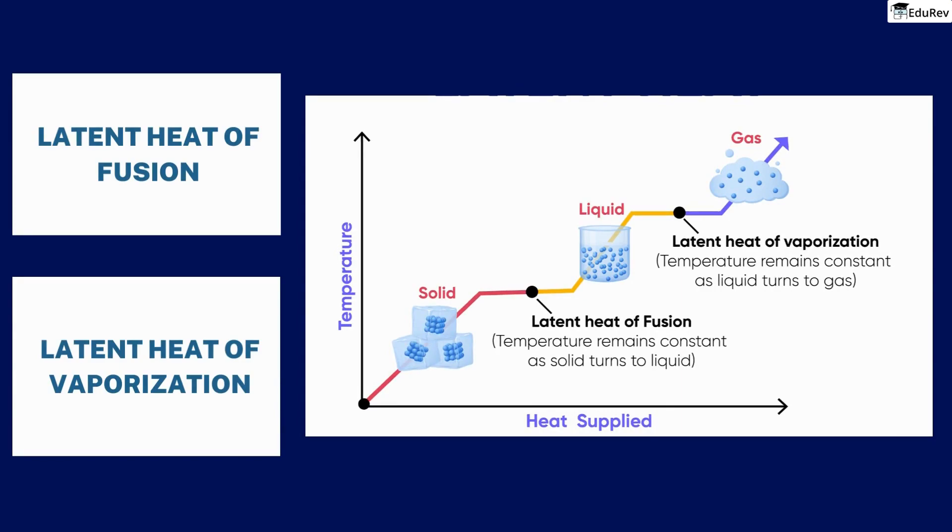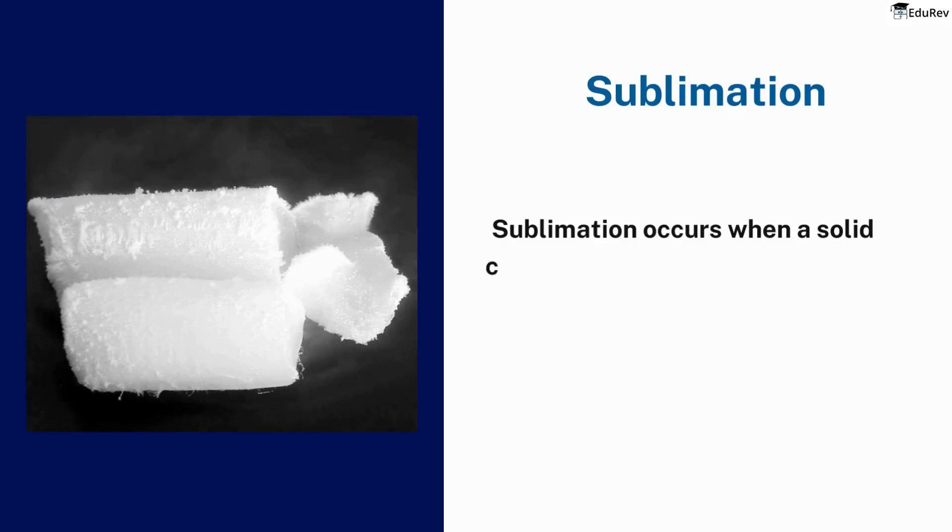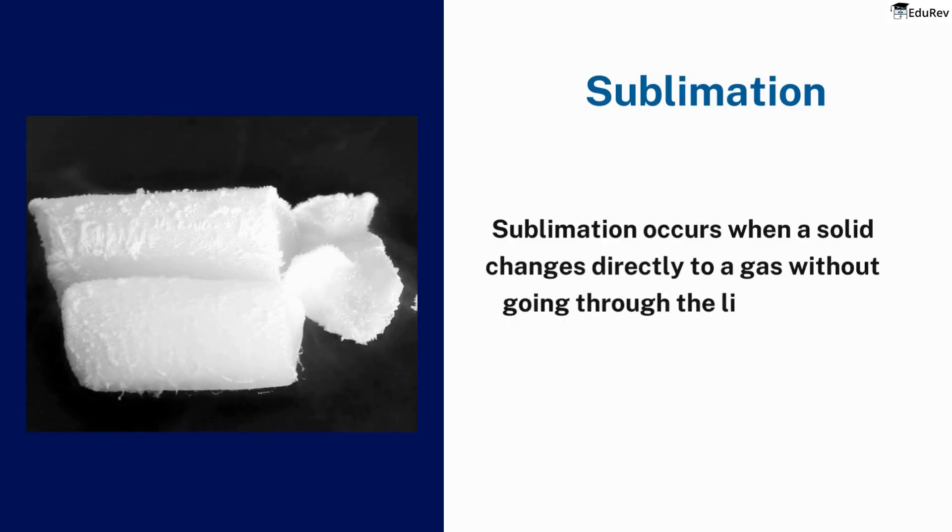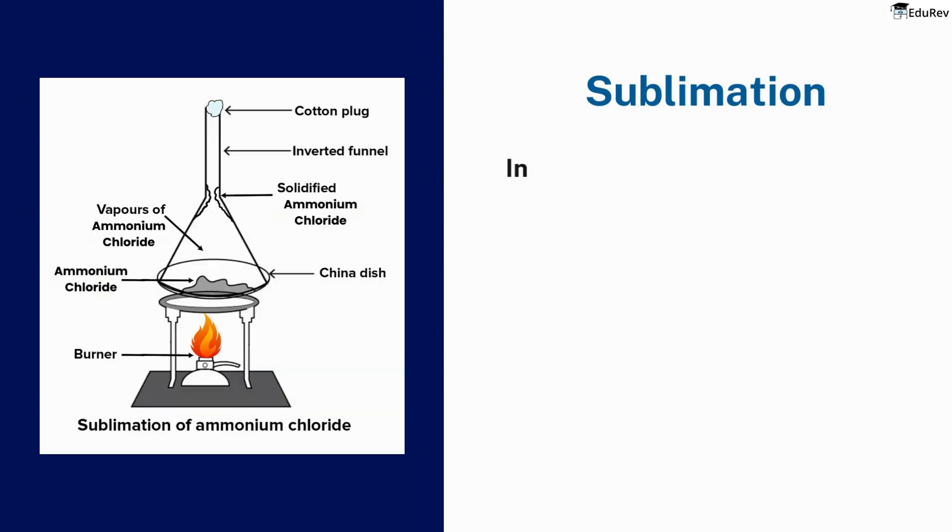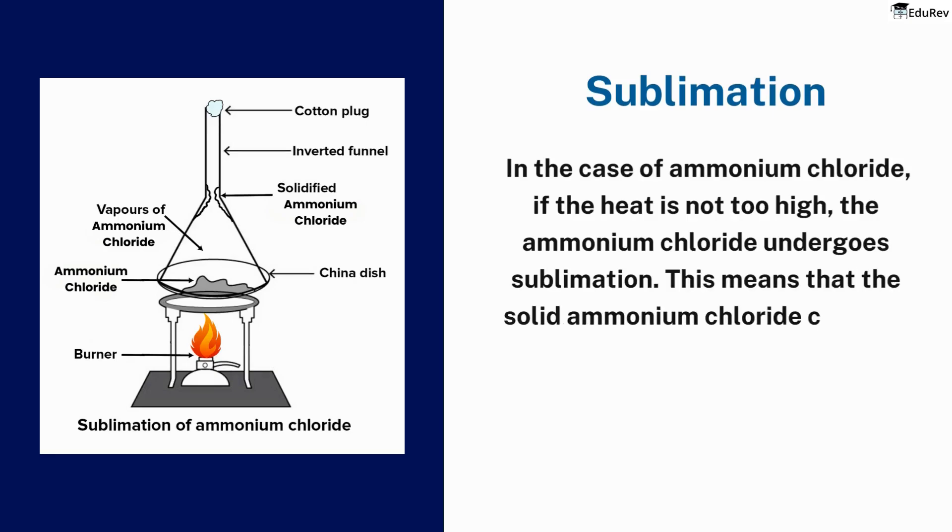Next, let's understand the concepts of sublimation and deposition. Sublimation occurs when a solid changes directly to a gas without going through the liquid state. In the case of ammonium chloride, if the heat is not too high, the ammonium chloride undergoes sublimation. This means that the solid ammonium chloride changes directly into a gas without first melting into a liquid.